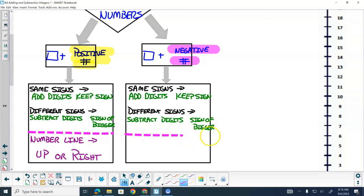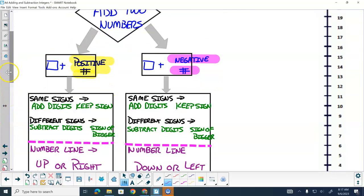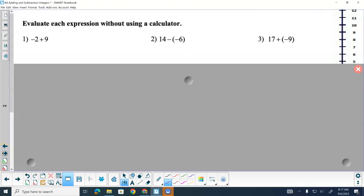On a number line, down or left. So you try those three now. Try these three: negative 2 plus 9, 14 minus negative 6, 17 plus negative 9. Come up with answers for it.